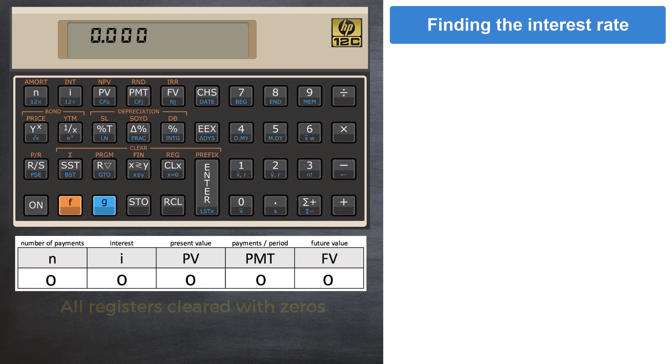Also, if your calculator is not set to the default of two decimals for the display, set it now by pressing the keys F and the digit 2. Let's begin.